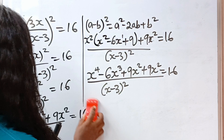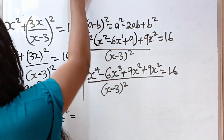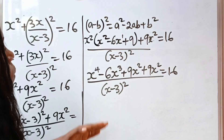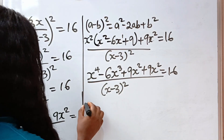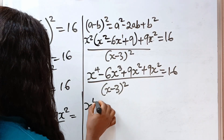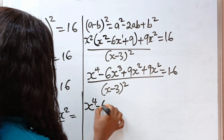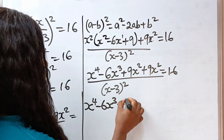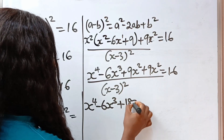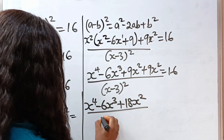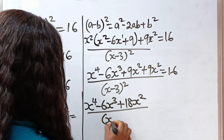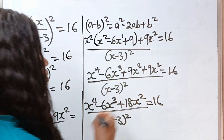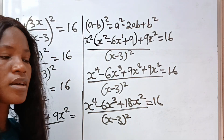Now let us continue. We have x to the power of 4 minus 6x to the power of 3, plus this plus this will give us 18x squared, divided by x minus 3 squared, is equal to 16.